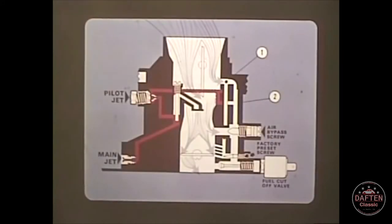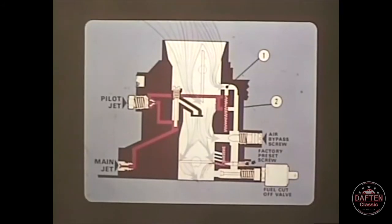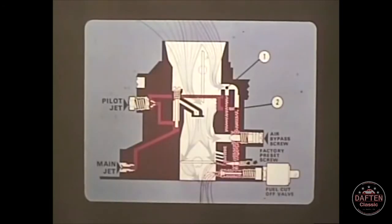During idle, fuel from the main jet is drawn through the pilot jet to numbers one and two, where it mixes with air from calibrated drillings. In drilling number one, the fuel air mixture flows past the factory preset volume control screw and onto the engine. In drilling number two, the rest of the fuel air mixture, which is controlled by the air bypass screw, passes through the open fuel cutoff valve and onto the engine.